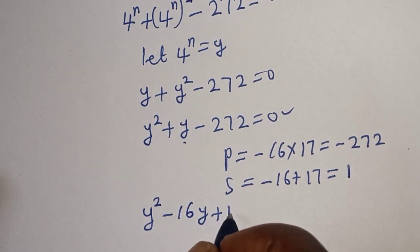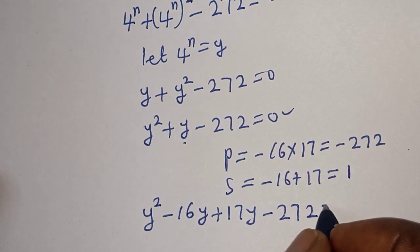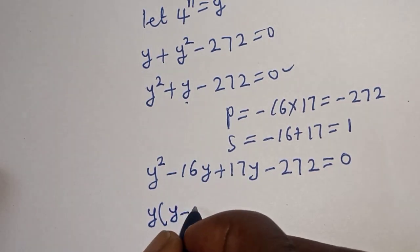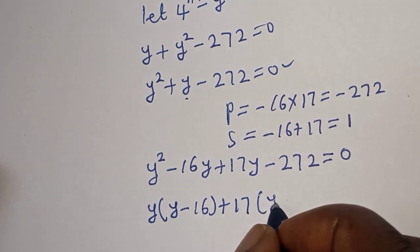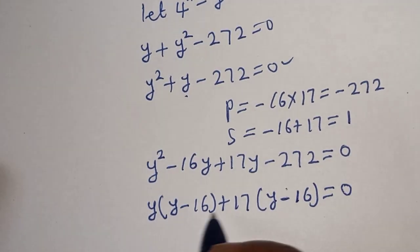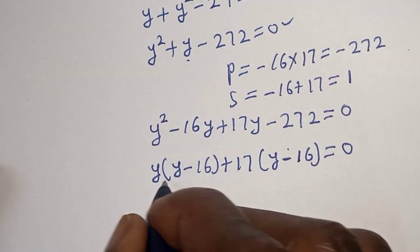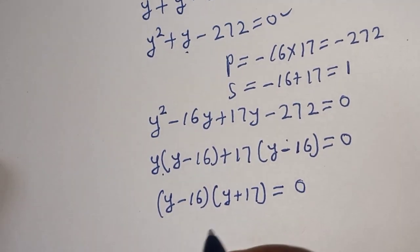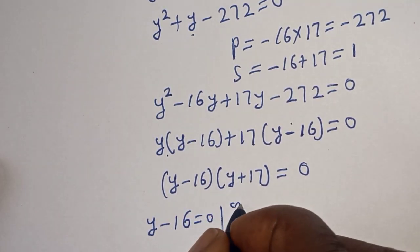Replacing the middle term, we have y squared minus 16y plus 17y minus 272 equals 0. Factoring in groups: y times bracket y minus 16, plus 17 times bracket y minus 16, equals 0. Since y minus 16 is common, we get y minus 16 multiplied by y plus 17 equals 0.